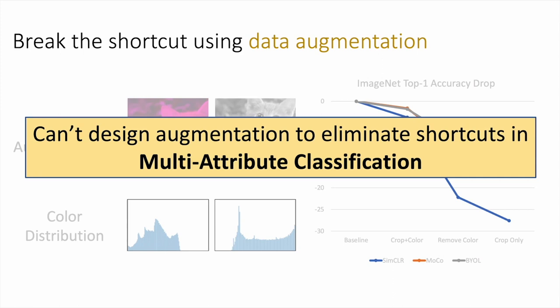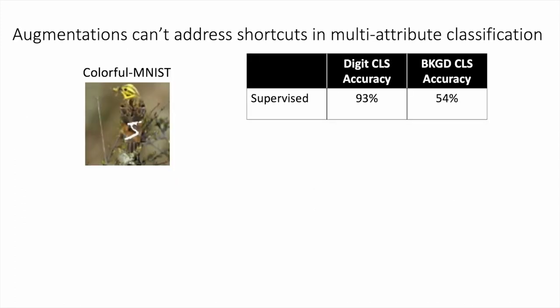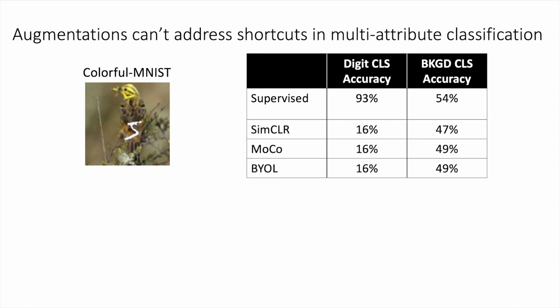Unfortunately, data augmentation does not really solve the full problem. For example, it does not work for multi-attribute learning. Consider the following images. The background has some objects and it also has a digit. Supervised learning achieves good performance on both tasks. If we use contrastive learning, the background classification is good, but the digit classification just failed. This is because the background acts as a shortcut, so the network does not need to learn about digits to achieve low contrastive loss.